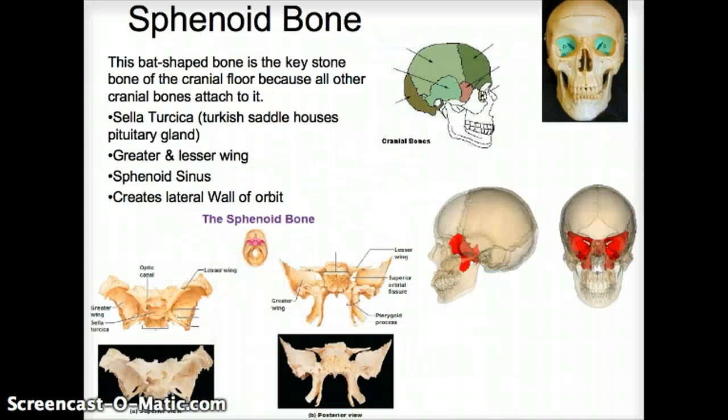Let's do the sphenoid bone. The sphenoid bone is a bat-shaped bone, and it's a key bone because all the other bones of the calvarium attach or have a connection with it. This is important for something like craniosacral therapy, where we work with the joints in the skull, or when we get banged on it — such as with a patient who had severe headaches from a blow that shifted the bone internally.